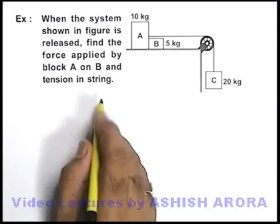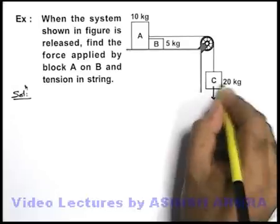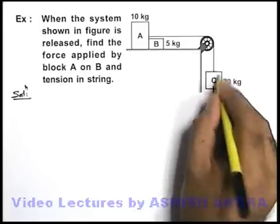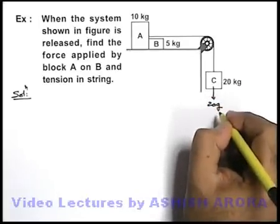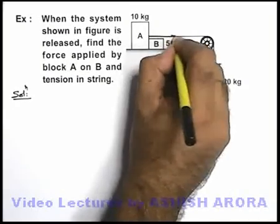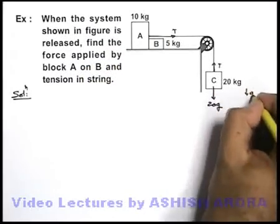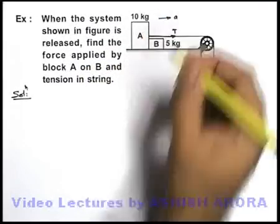Here we can see, as soon as we release the system, due to the weight of this block C which is 20g the system will start coming down. And due to this a tension T is developed in the string, which will act also on the block A. And as they are connected we can see, the whole system will move with an acceleration A.